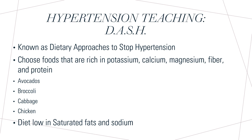Hypertension teaching: DASH, also known as Dietary Approaches to Stop Hypertension, teaches a heart-healthy eating plan for hypertension. According to the Mayo Clinic, this eating plan should include foods rich in calcium, fiber, potassium, and magnesium — such as avocados, chicken, cabbage, and broccoli. Foods high in sodium and saturated fats increase blood pressure, so limiting or eliminating them is recommended. Sticking to the DASH diet can reduce blood pressure in as little as two weeks and can also help manage cholesterol levels.